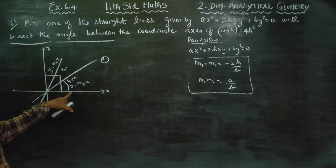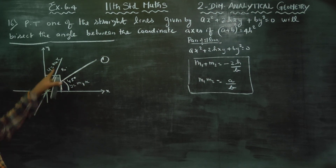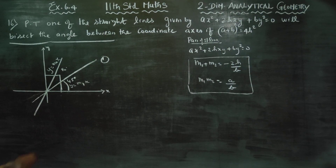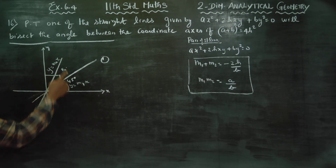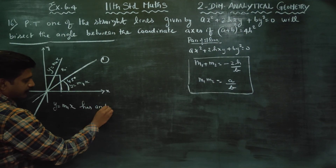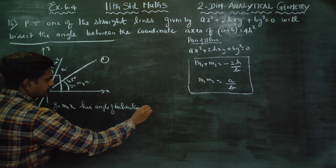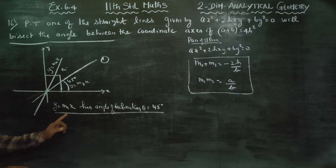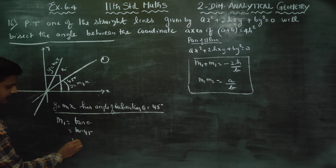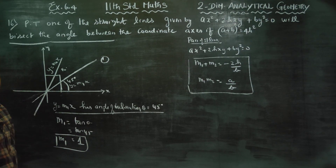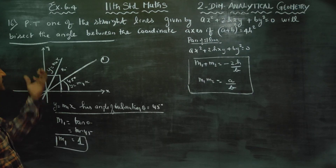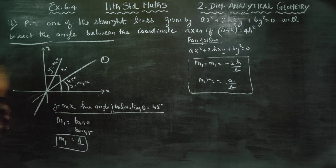For the line y = m1·x, the angle of inclination theta is equal to 45 degrees. Therefore, slope m1 = tan(theta) = tan(45°) = 1. So m1 = 1, and similarly m2 = 1.